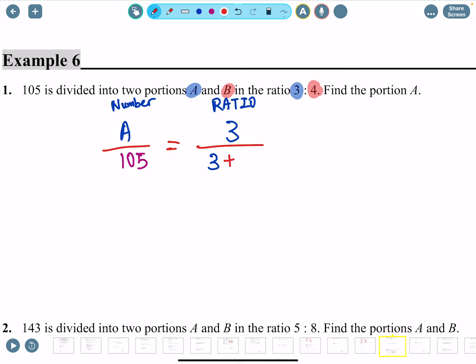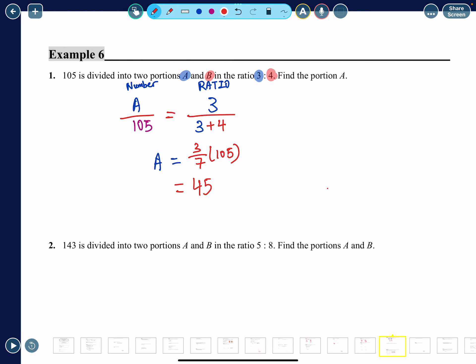105 is actually everything, right? So you have to add the ratio three plus four, everything which is seven. So finally you will still end up with what I was talking about, three over seven times 105 will be how many portions allocated for A. 3 divided by 7 times 105 is 45, so A is 45.